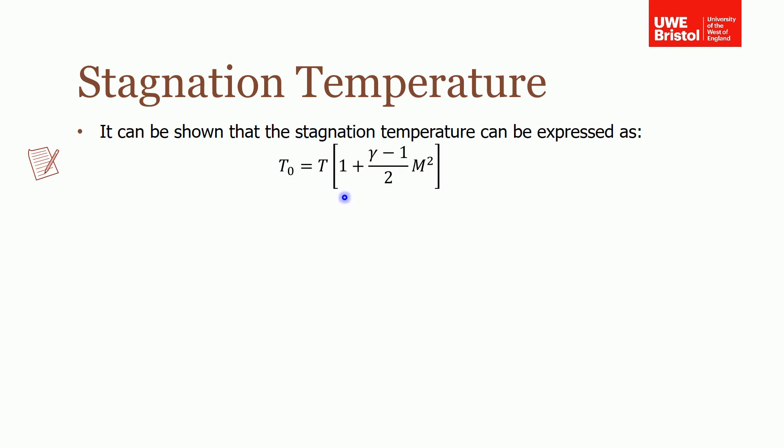The stagnation temperature is related to the velocity. I've shown it in this form: the stagnation temperature equals the temperature of the fluid times a function of gamma and the Mach number. I'm not going to derive this for you. I don't think it's necessarily important as long as you understand what the stagnation temperature is and how to use it.